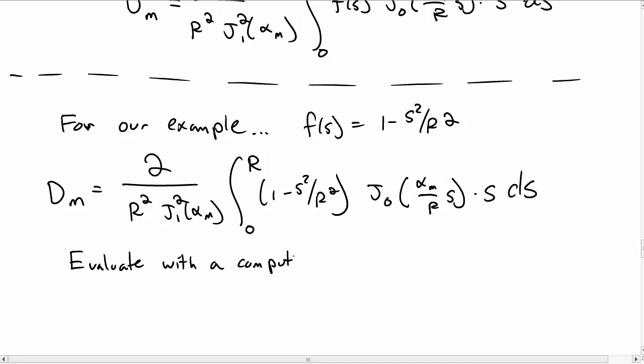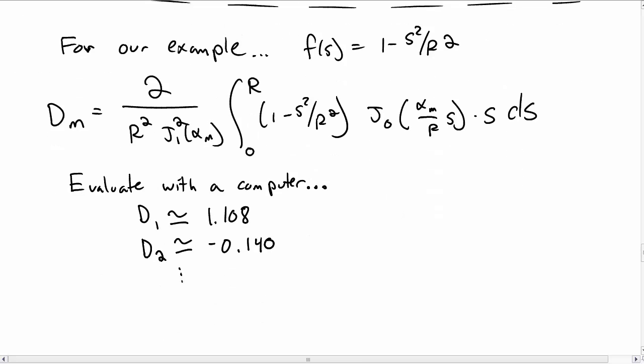So that's pretty rough, but we can evaluate these with a computer, and then that's not too bad because the computer does all the work for us. And so if we evaluate with the computer, you find d sub 1 is about 1.108, d sub 2, negative 0.140, and so on and so forth.